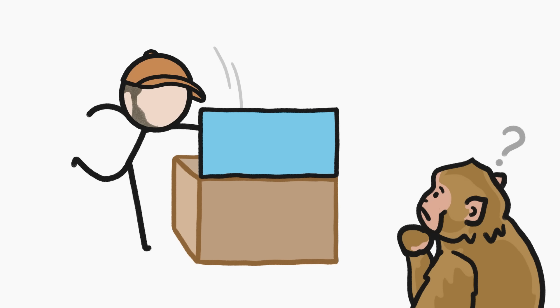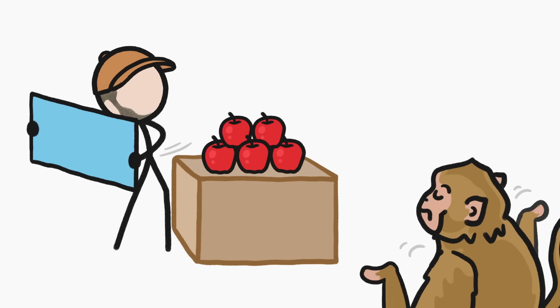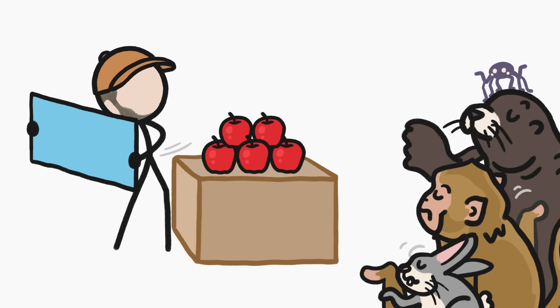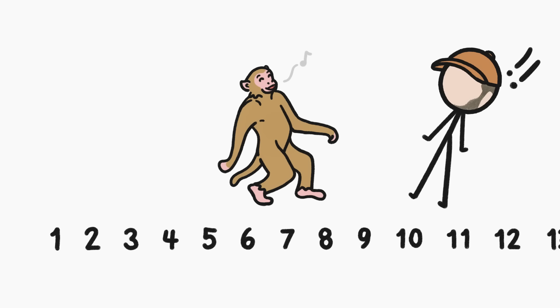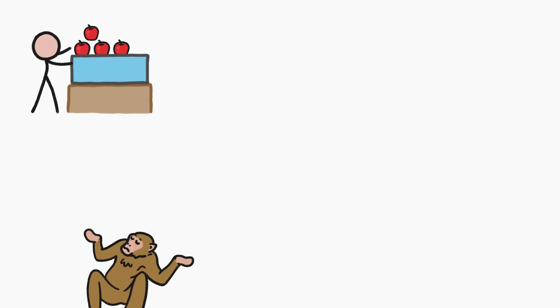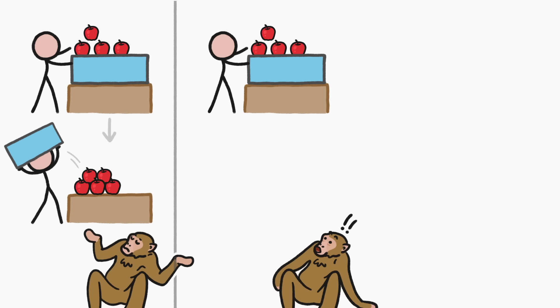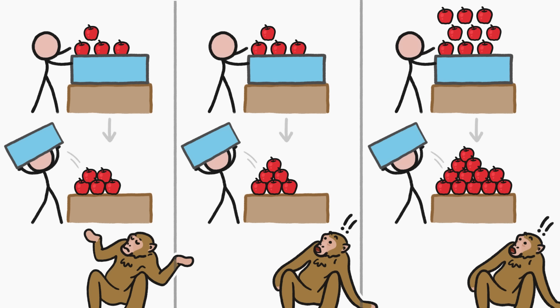But if I lowered, say, four apples during the trick and revealed five apples, the monkeys didn't seem to get surprised at all, nor did any other species of animal that scientists have tested. This suggests that maybe non-human animals can't count any higher than four. But that's not exactly right, because while monkeys aren't surprised when they see four apples get lowered and five get revealed, they are surprised when four apples get lowered and six are revealed, or when nine apples get lowered and twelve get revealed.